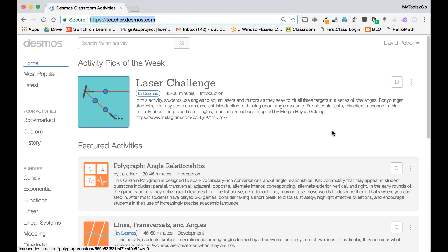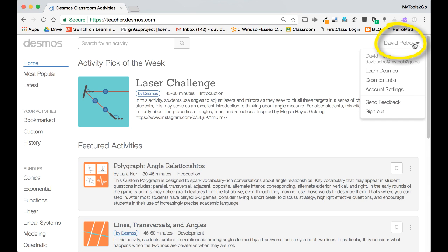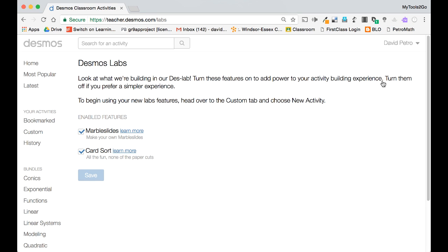The first step in creating a marble slides is to turn on Desmos labs. To do this, drop the menu down on the top right by your login name and click on the Desmos labs link. Make sure marble slides is checked off and maybe check off card sort while you're at it. Click save and then click on custom to create your new activity.